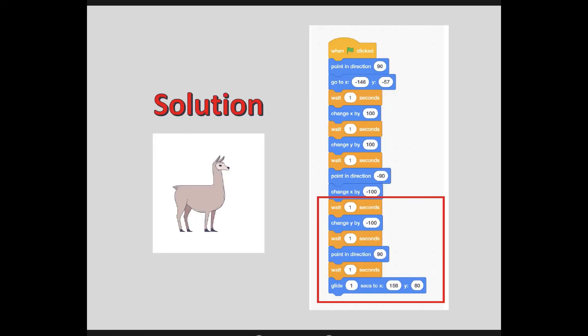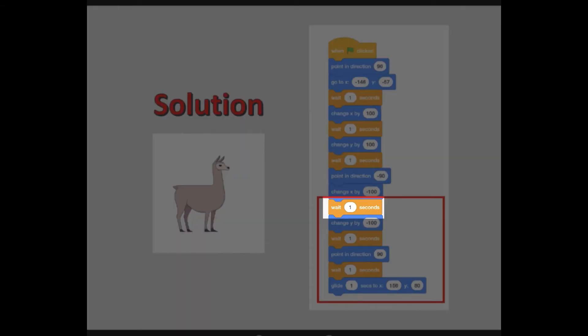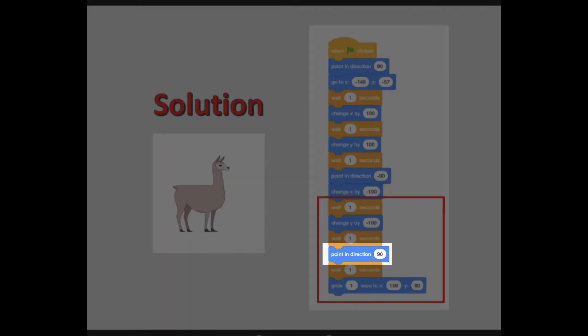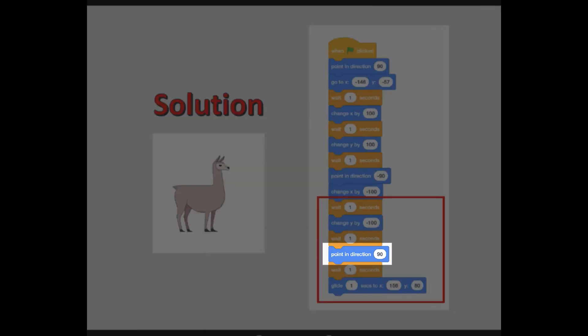There's more than one way you could have approached this — that's one of the really cool things about coding, there are many different paths. So don't stress if what you came up with looks different from my code. If your Llama did what he's supposed to do, then you solved the challenge. The way I did it was to add a wait, change my Y coordinate by negative 100, wait again, point in the other direction at positive 90 — remember, I was negative 90 up here, so to flip around I need positive 90 — wait one second, and then glide to my new coordinate up in the right-hand corner.